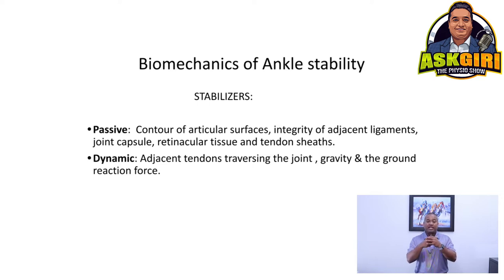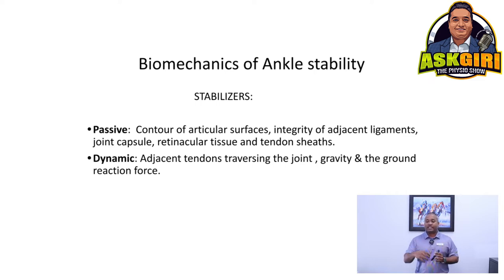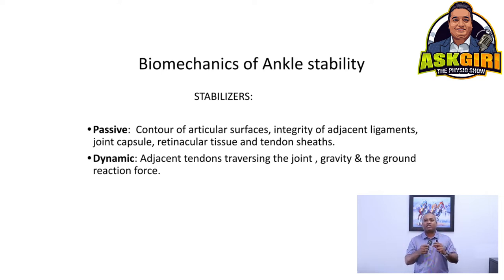Going back to passive stabilizers: the shape of the bones themselves offers stability — the ankle mortise allows specific movement. The integrity of the ligaments is also crucial — there are many ligaments around the ankle, on the front, sides, and back. The joint capsule integrity matters, as do retinacular sheets, which bind the tendons coming down from the leg to the foot.